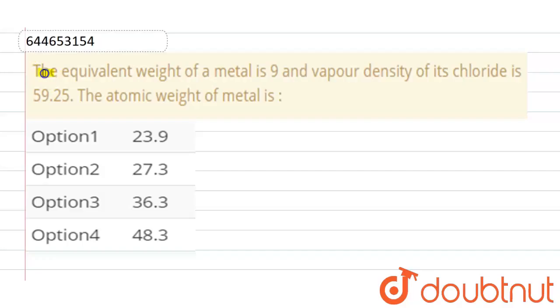The question is: the equivalent weight of a metal is 9 and the vapor density of its chloride is 59.25. Now the atomic weight of the metal is,